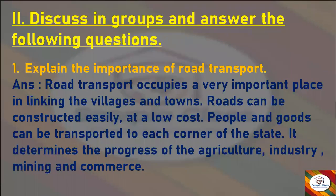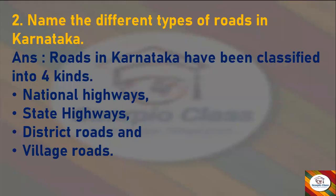Now let's move to the next section: Answer the Following Questions. First question — Explain the importance of road transport. Answer: Road transport occupies a very important place in linking the villages and towns. Roads can be constructed easily at a low cost. People and goods can be transported to each quarter of the state. It determines the progress of agriculture, industry, mining, and commerce.